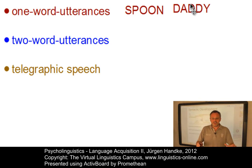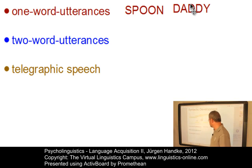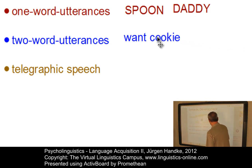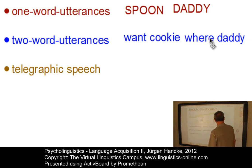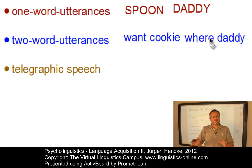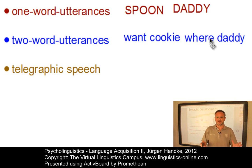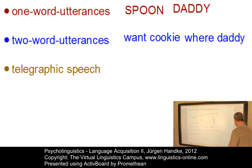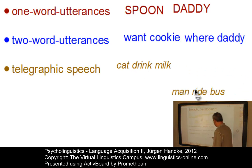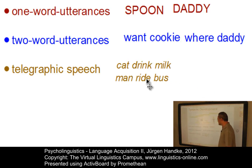Around the age of 18 months, the holophrastic or one-word utterance phase glides gradually into a stage where the child becomes aware that adding more words will improve communication, and thus starts to produce two-word utterances. Examples like 'want cookie' or 'where daddy' are typical examples of this two-word utterance stage. At the age of around 20 to 24 months, children begin to produce longer utterances that show more complex syntactic patterns. At first, these multiple-word utterances lack grammatical inflections and function words — this kind of language is then often called telegraphic speech, with examples such as 'cat drink milk' or 'man ride bus'.